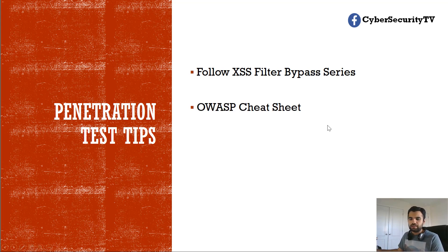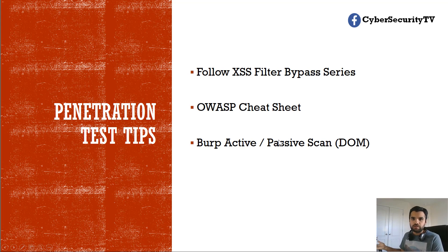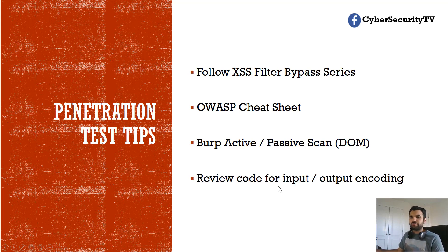Another resource is the OWASP Cheat Sheet — it's open source, just Google 'OWASP Cheat Sheet for XSS' and you should find it; it's very handy. If you are using Burp or OWASP ZAP, you can also find XSS through the active or passive scan — we saw that in the last video when we scanned a website and it found the XSS. DOM-based XSS is a bit different, and I've done a video on that as well — you can find it with the passive scan in Burp. If you are doing gray box testing, it's best to review the code for input and output encoding, and if the application is not doing that, there's a high probability it could have an XSS vulnerability.